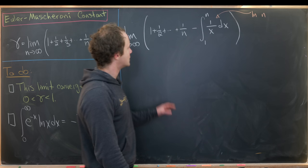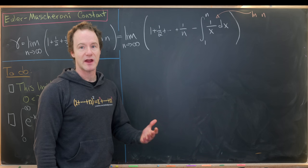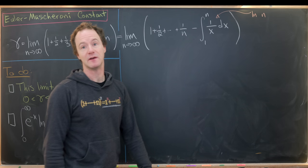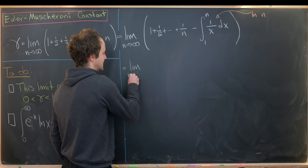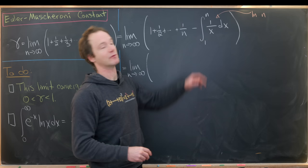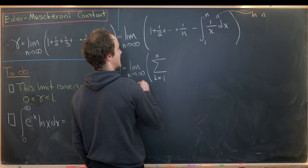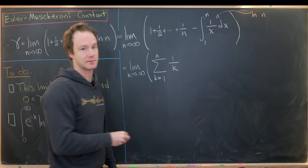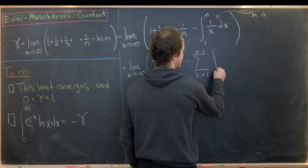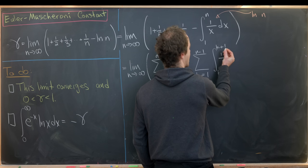Next we take that integral and break it up into a sum of pieces over intervals from 1 to 2, 2 to 3, 3 to 4, up to n−1 to n. Using summation notation, the harmonic sum becomes the sum as k goes from 1 to n of 1/k, and the integral becomes the sum as k goes from 1 to n−1 of the integral from k to k+1 of 1/x dx. We end at n−1 so that the final integral ends at n.